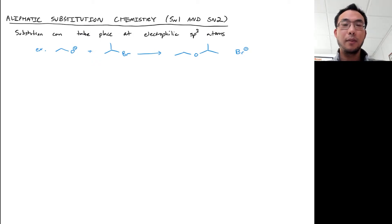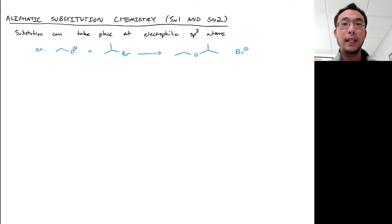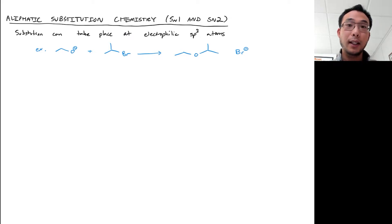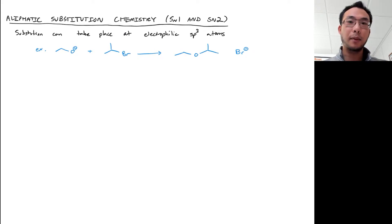In this video, we will learn about aliphatic substitution chemistry. These are commonly known as SN1 and SN2 reactions, and the word aliphatic refers to any sort of organic molecule that is not aromatic. I typically think of aliphatic as meaning the same thing as alkane or alkyl.